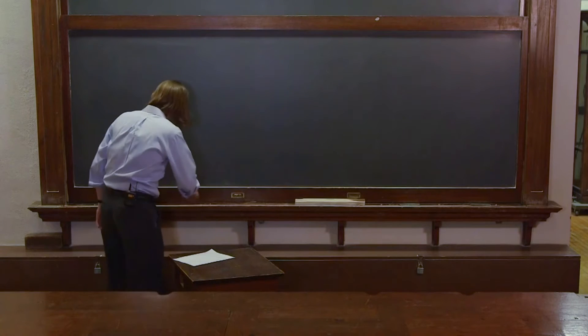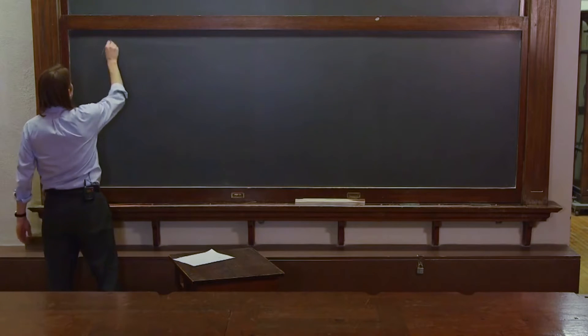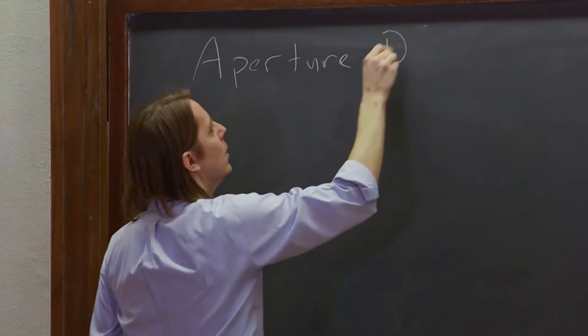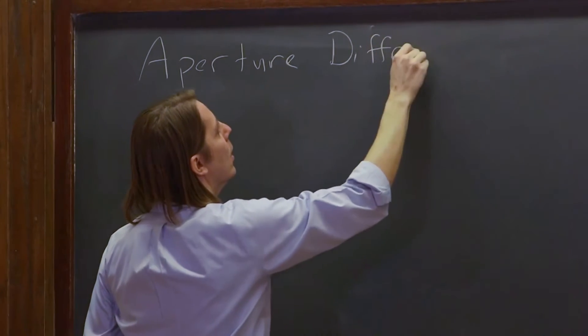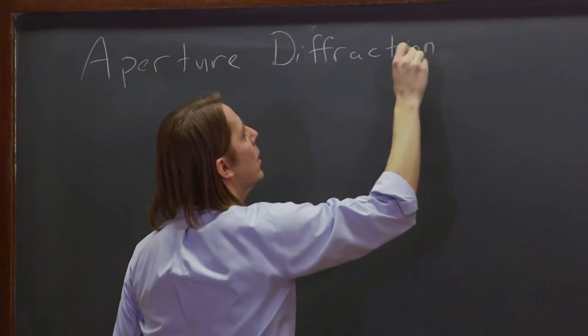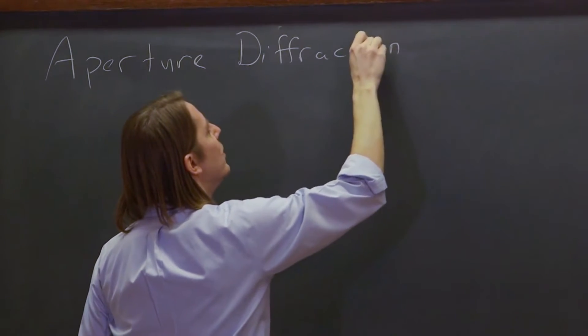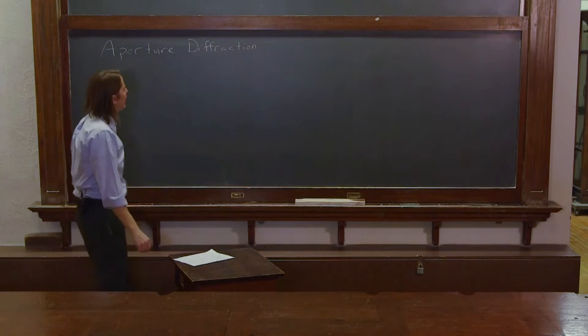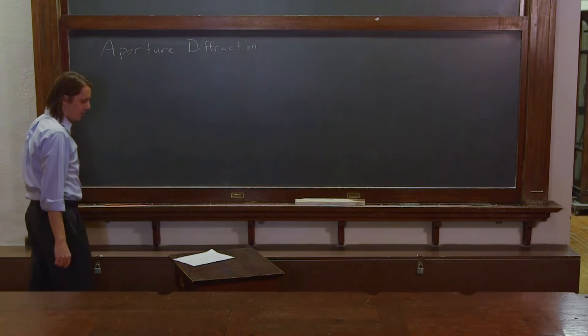Now, let's look at diffraction through an aperture. A slit is sort of a one-dimensional aperture or hole. A real aperture now, we have to think in two dimensions. So things get complicated.